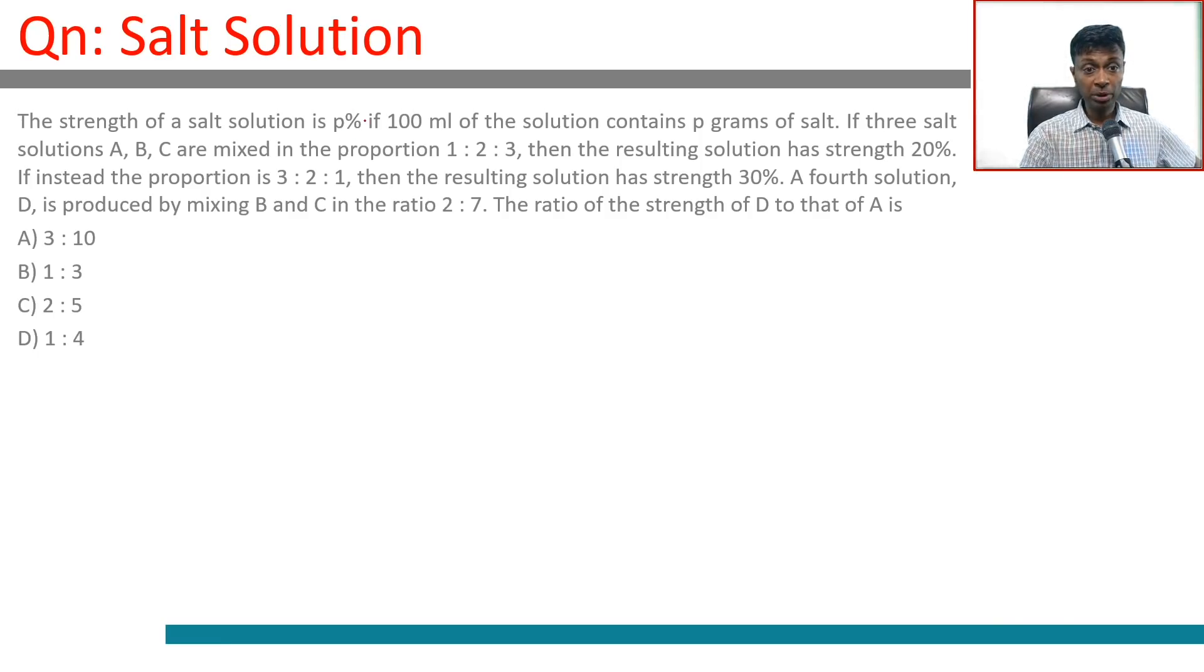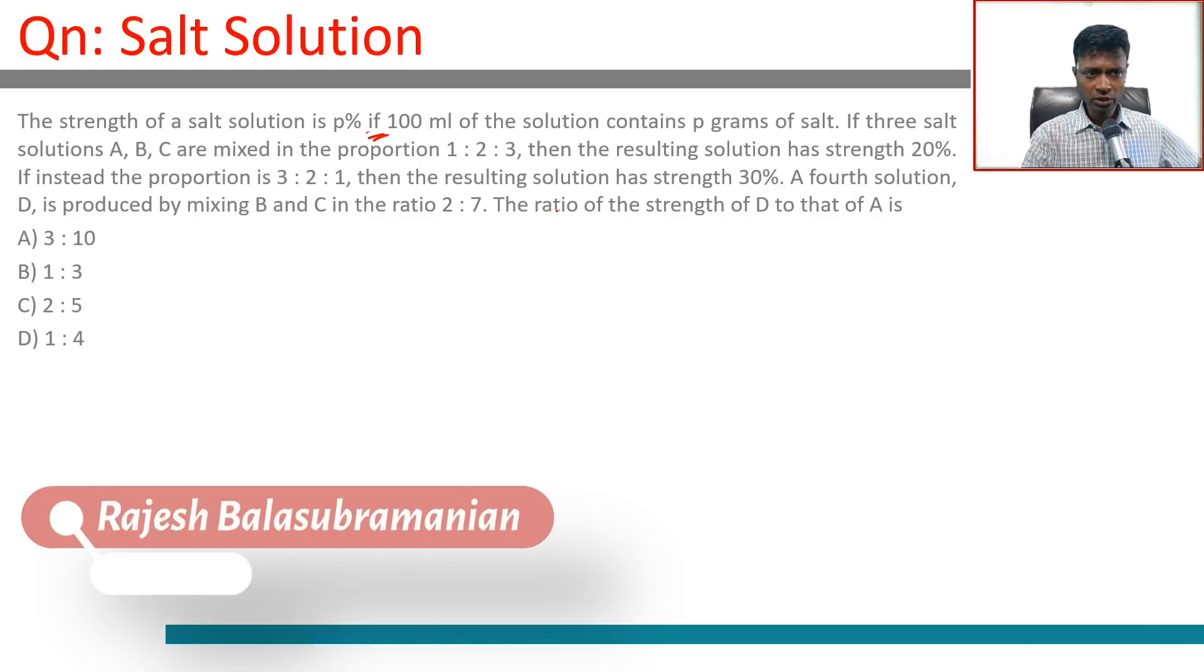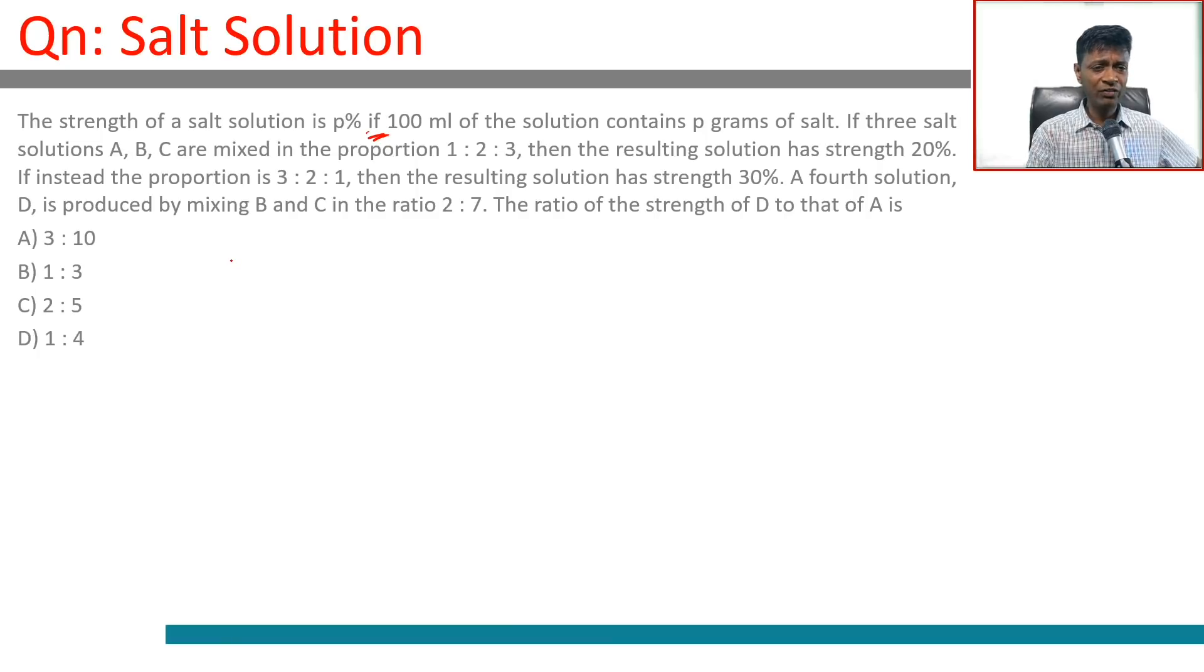The strength of a salt solution is p percent if 100 ml of the solution contains p grams of salt. Three salt solutions A, B, and C are mixed in the proportion 1:2:3, then the resulting solution has strength 20%. If instead the proportion is 3:2:1, the resulting solution has strength 30%.